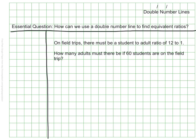To demonstrate the double number line method, we're going to use an example. So on field trips, there must be a student to adult ratio of 12 to 1. How many adults must there be if 60 students are on the field trip?